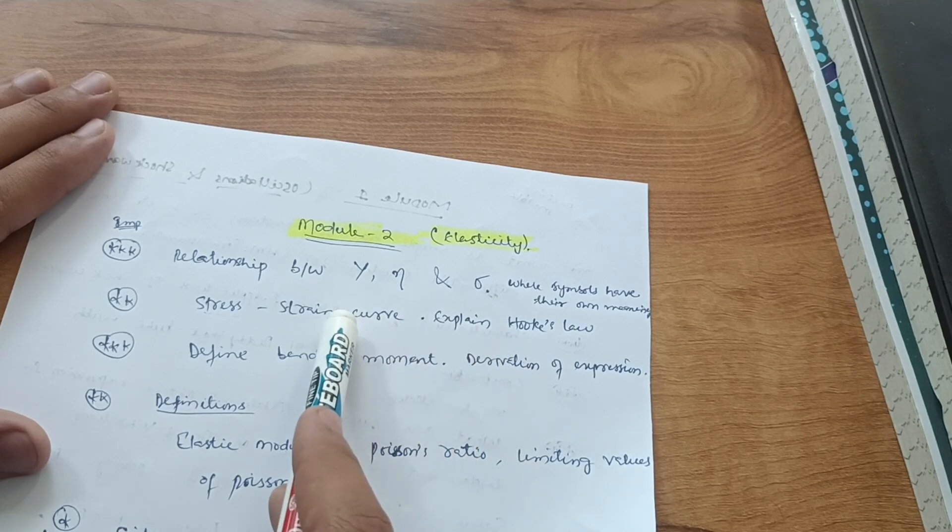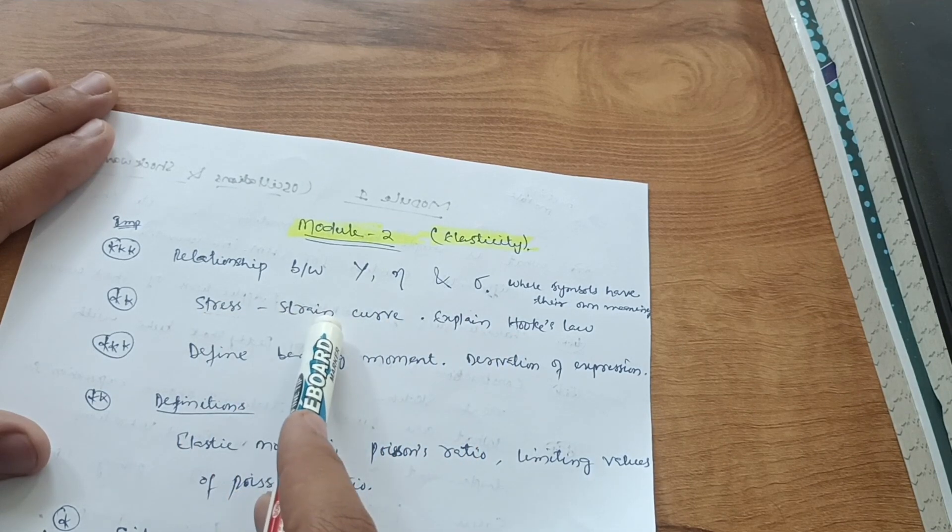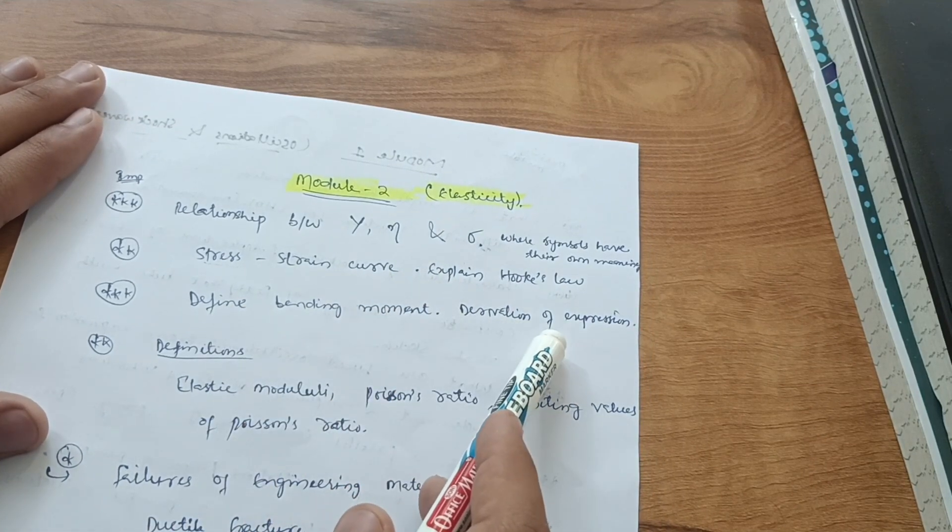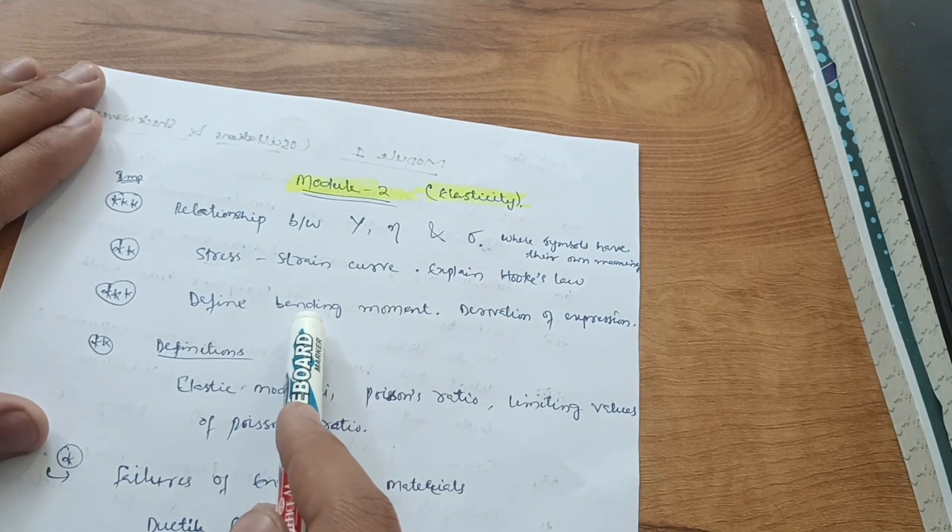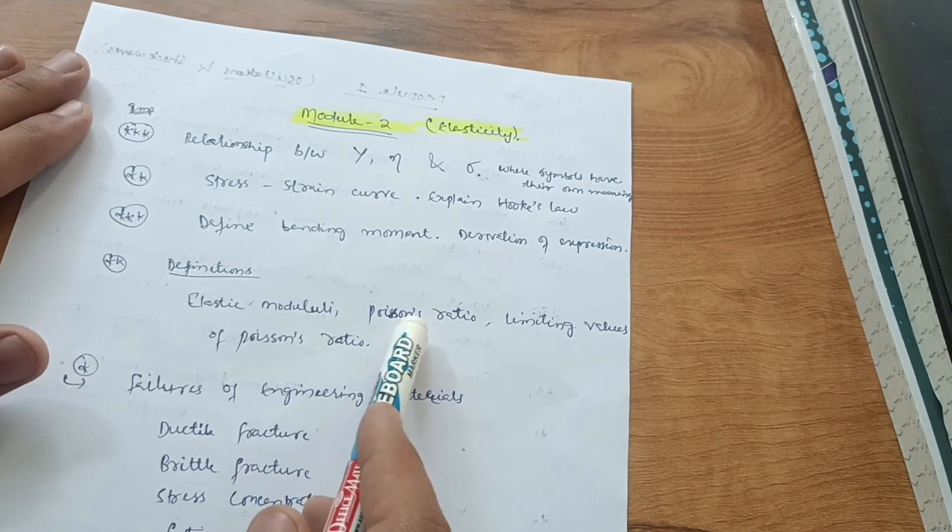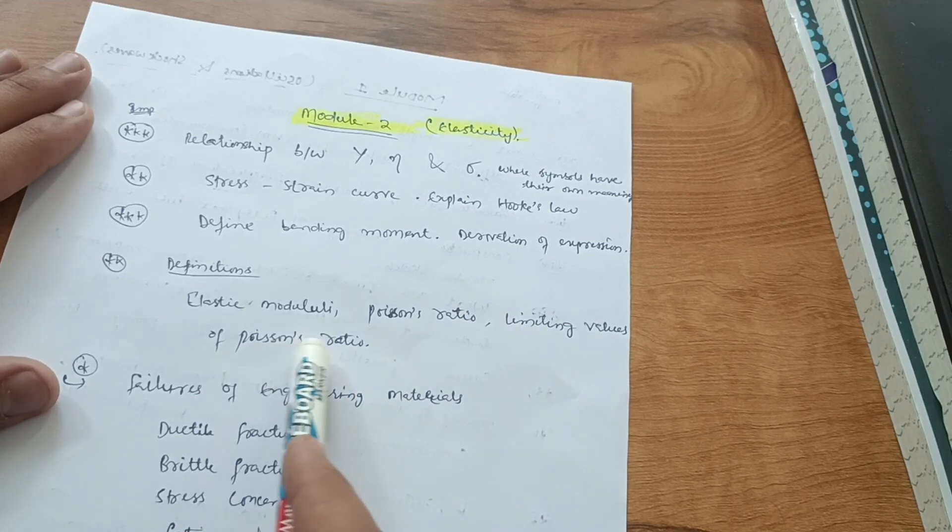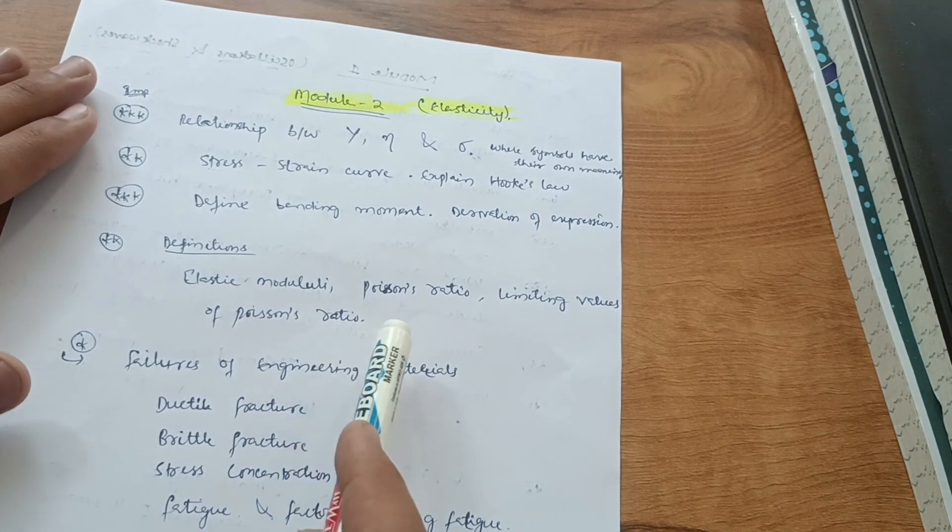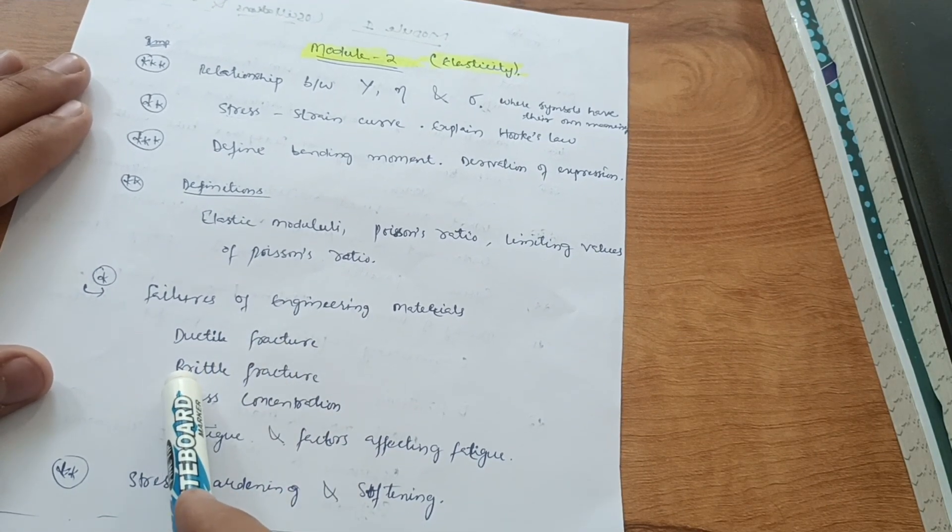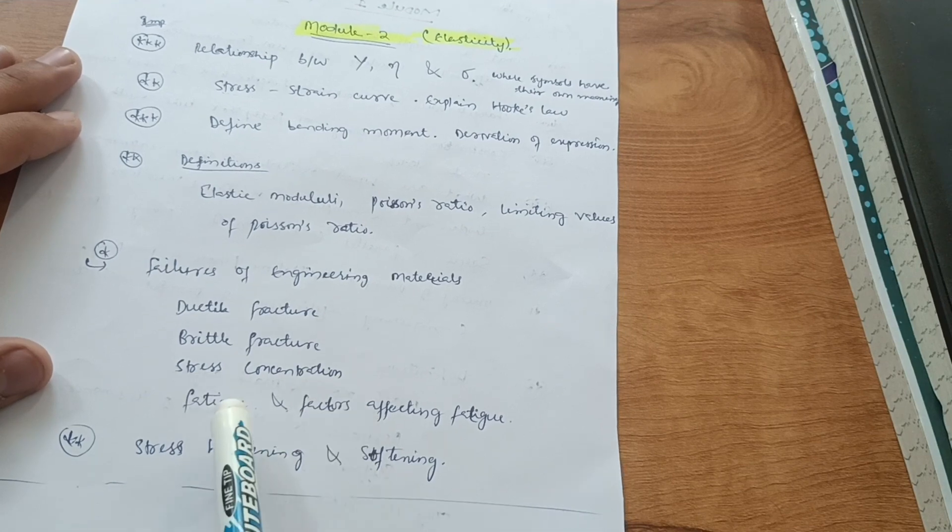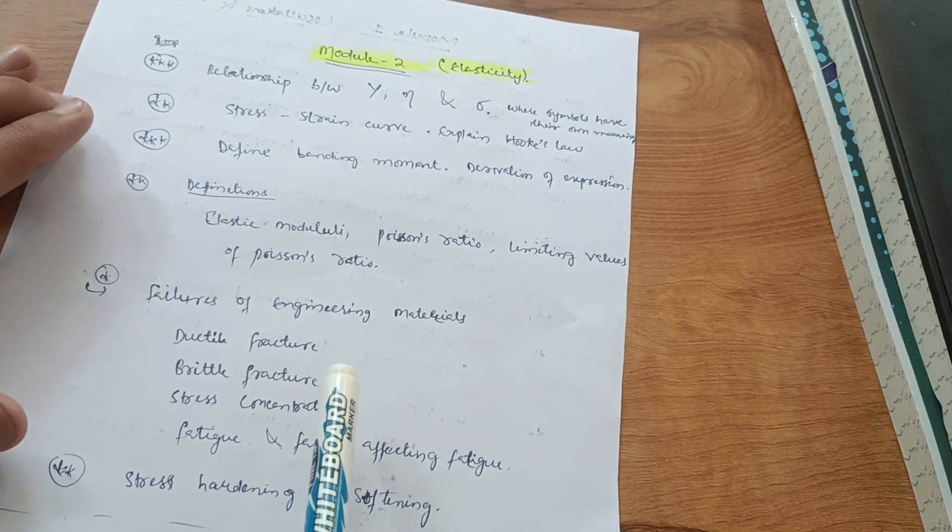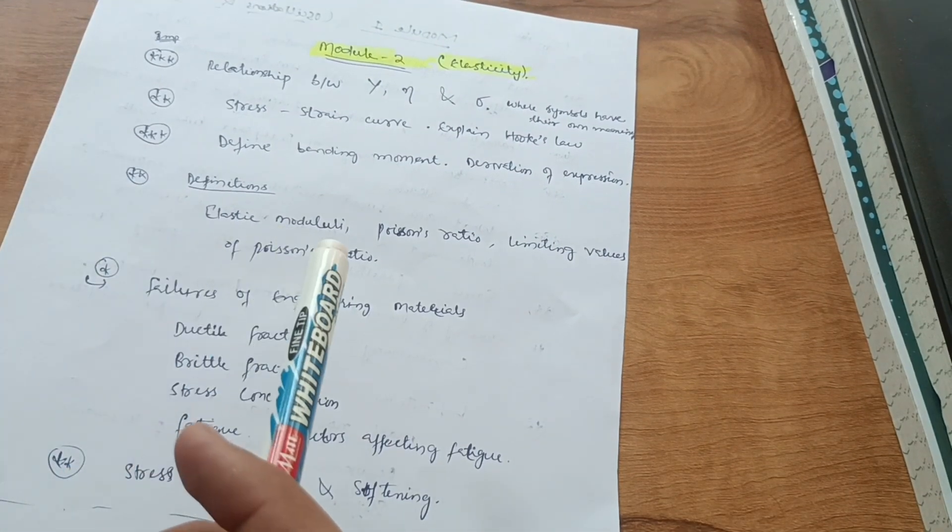Stress-strain curve, explain Hooke's law, very simple. You have to write down the graph for stress-strain curve and explain Hooke's law. Define bending moment and derivation of expression. Then definitions of elastic moduli like Poisson's ratio, limiting values of Poisson's ratio. Then failures of engineering materials like ductile fracture and brittle fracture, stress concentration, fatigue and factors affecting fatigue, and stress hardening and softening.